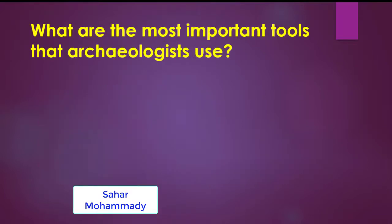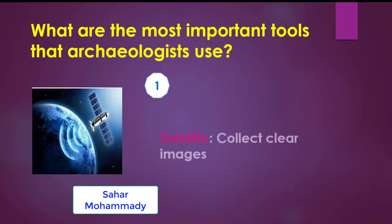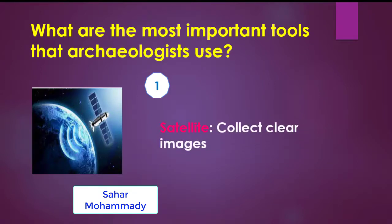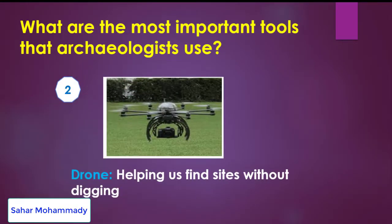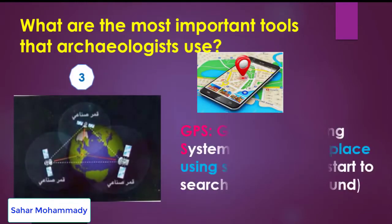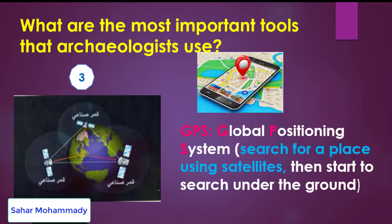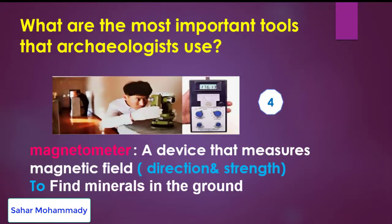What are the most important tools that archaeologists use? Can you guess? The first is satellite — it collects clear images of other places. The second is drone, which helps find sites without digging; it's like a small airplane without a pilot. The third is GPS, used to search for a place using satellites and then search under the ground. The fourth is magnetometer, a device that measures magnetic field direction and strength to find minerals in the ground.